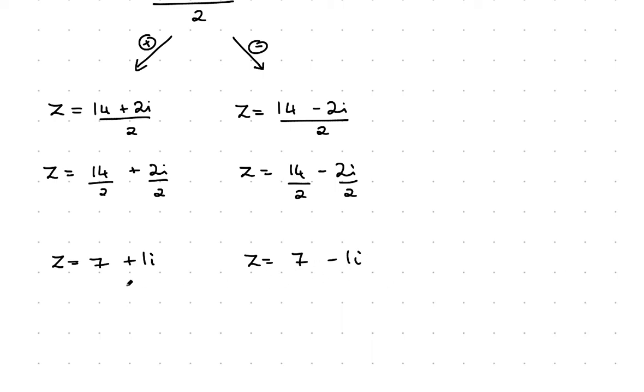If you look at what we have, we actually have the conjugates. We have z equals 7 plus 1i, and the conjugate that goes along with that is z equals 7 minus 1i. There we have that whole concept of the conjugate.